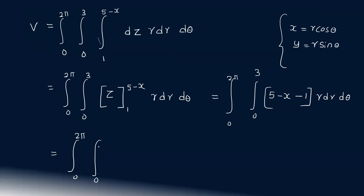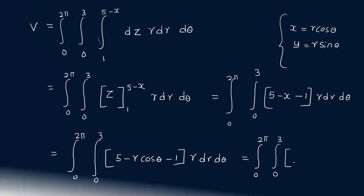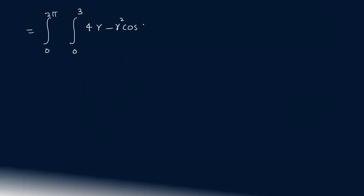That equals integral from 0 to 2π, integral from 0 to 3 of (5 minus r cosθ minus 1) r dr dθ, which simplifies to integral from 0 to 2π, integral from 0 to 3 of (4r minus r² cosθ) dr dθ.